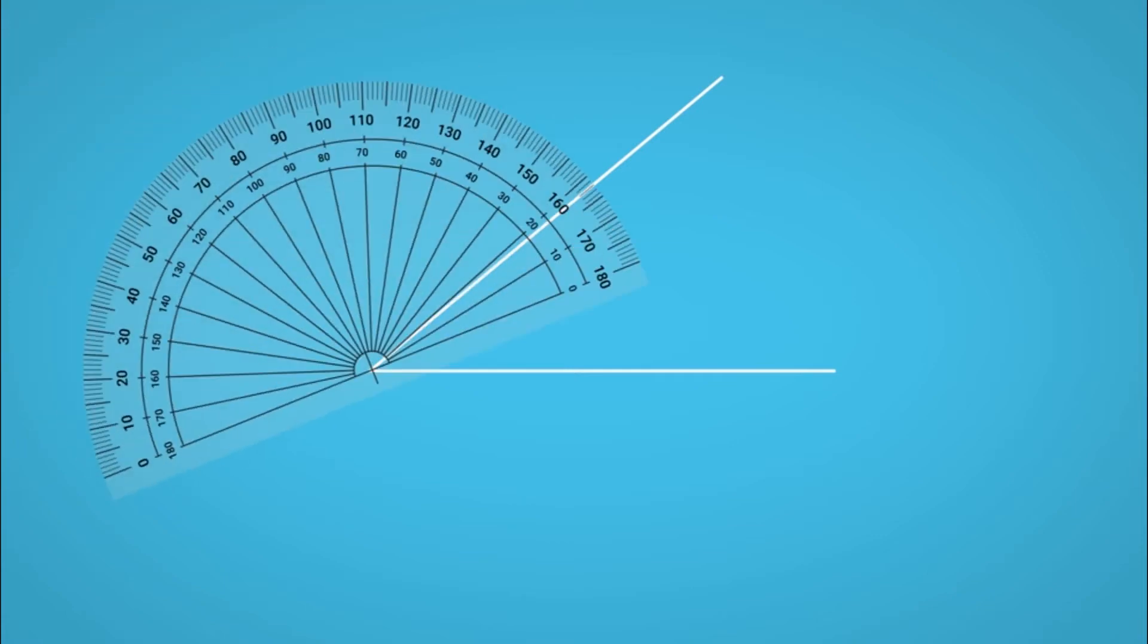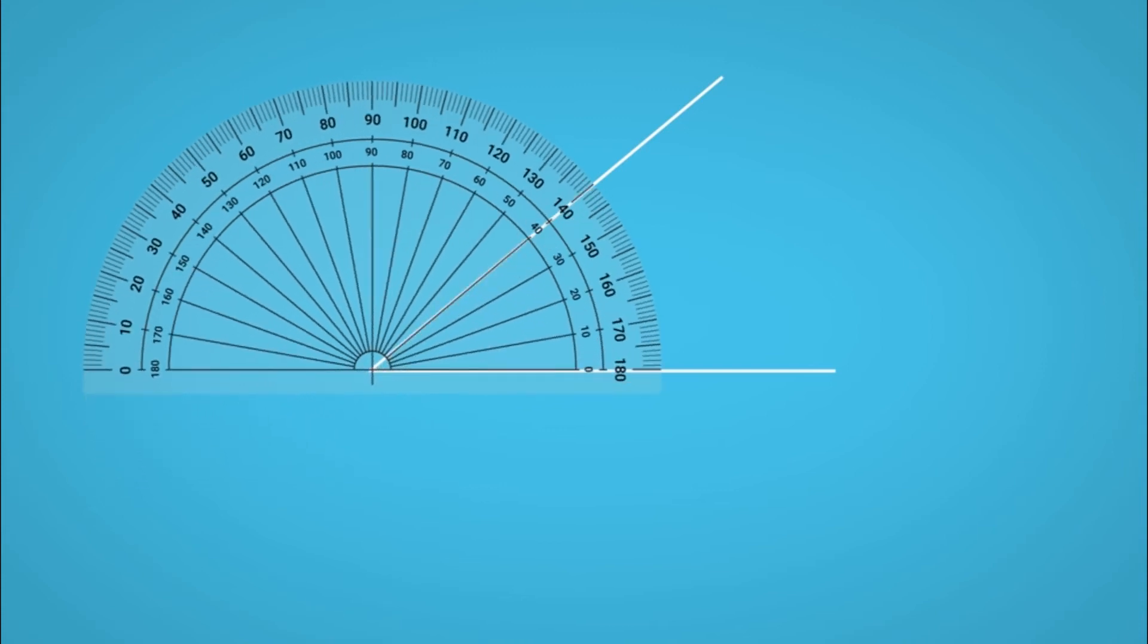Now, in order to measure an angle, the centre of the protractor should be placed on the vertex, the point where the two lines or rays meet. Next, the baseline should be aligned with either of the two lines of the angle in order to indicate 0 degrees.